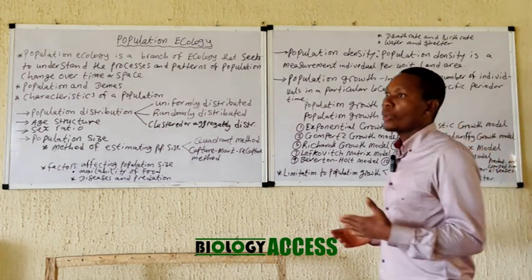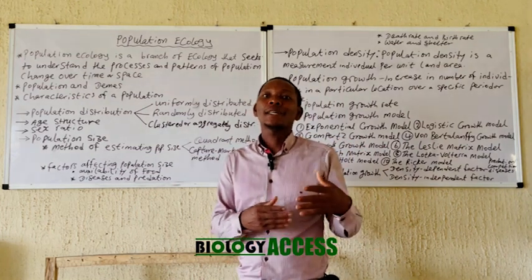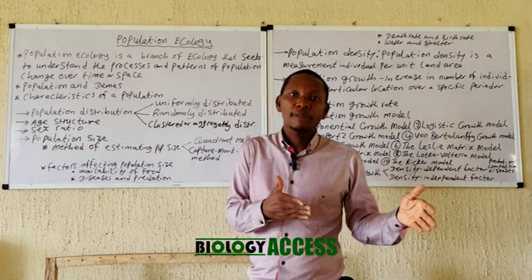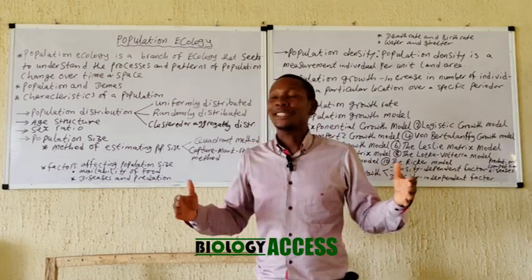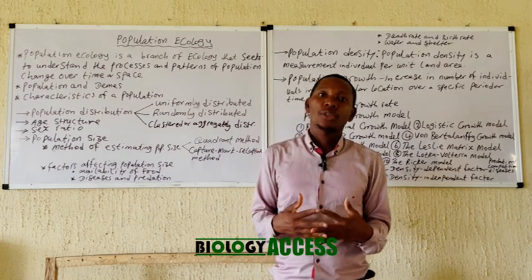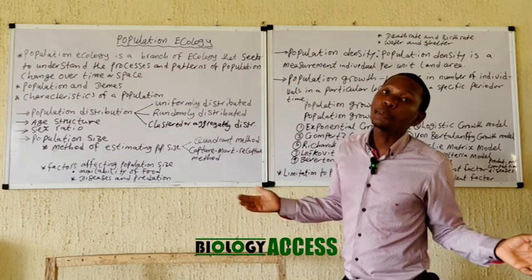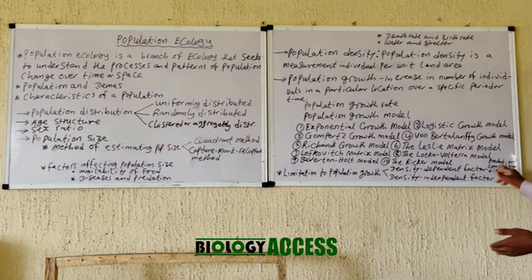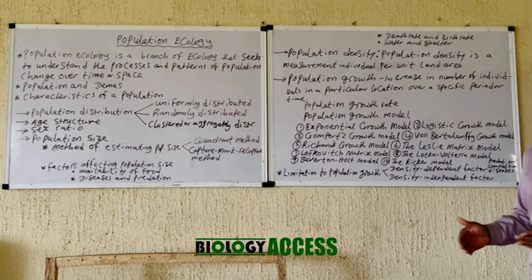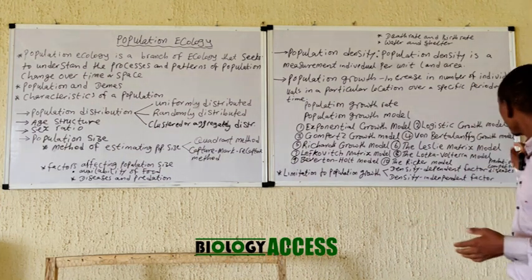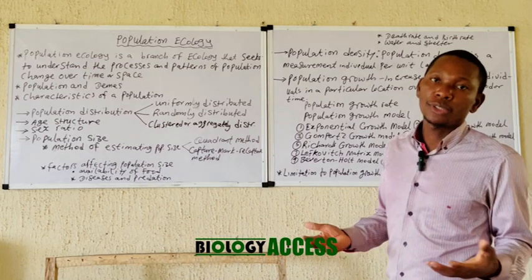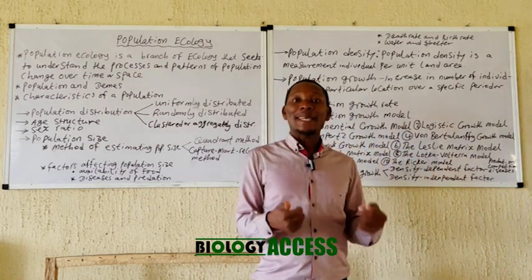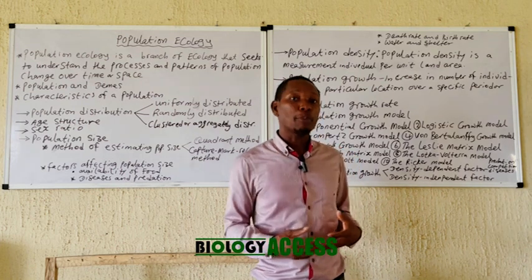Density-dependent factors include diseases. A small, spread-out species may slow down the rate of disease spread compared to a species that is large and compactly packed together, which aids the spread of disease. Predation is another density-dependent factor — predators can easily find prey in a large population. Competition also increases in a large population, leading to a decrease in population size when it becomes intense.